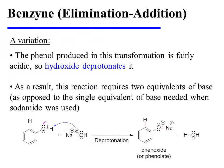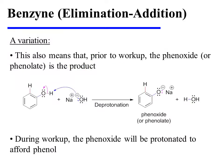Here is where we see a subtle difference in the mechanism. The phenol produced in this transformation is fairly acidic, so hydroxide inevitably deprotonates it. As a result, this reaction requires two equivalents of base — one for the elimination-addition and one for the deprotonation of the phenol product. This is in contrast to the reaction with sodamide, where only a single equivalent of base was needed. This proton transfer also means that prior to workup, it is the phenoxide, or phenylate, that is the product. During workup, that phenoxide can be protonated to afford phenol.